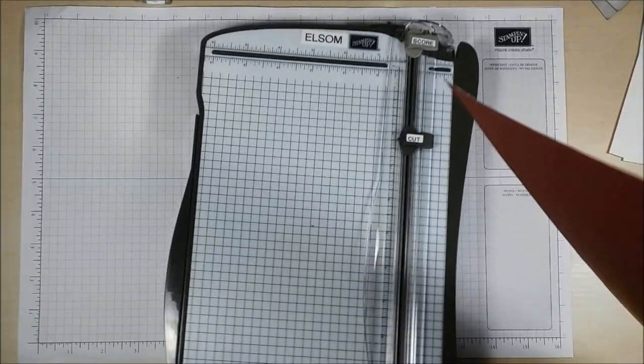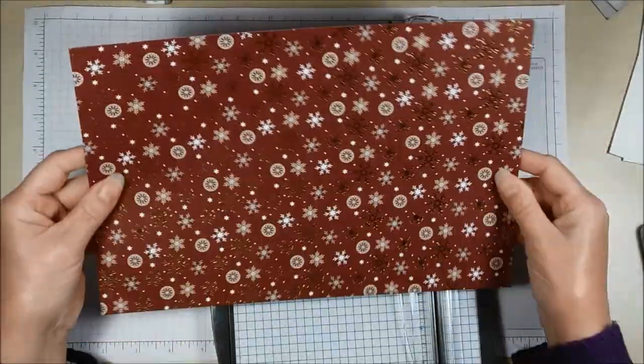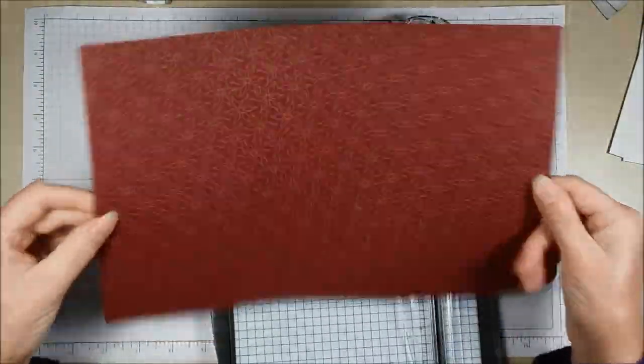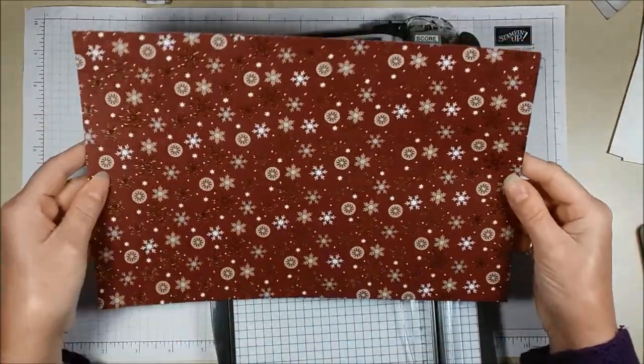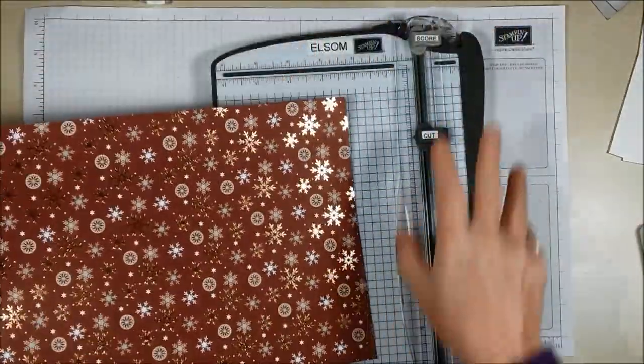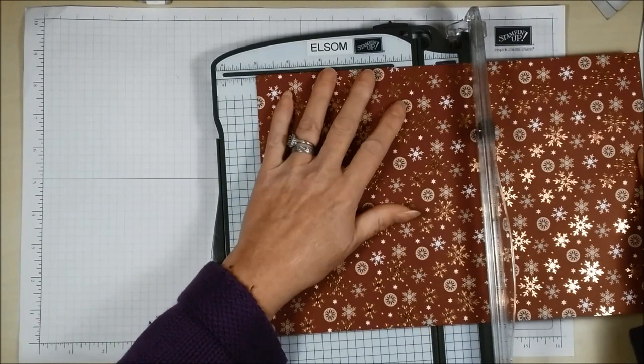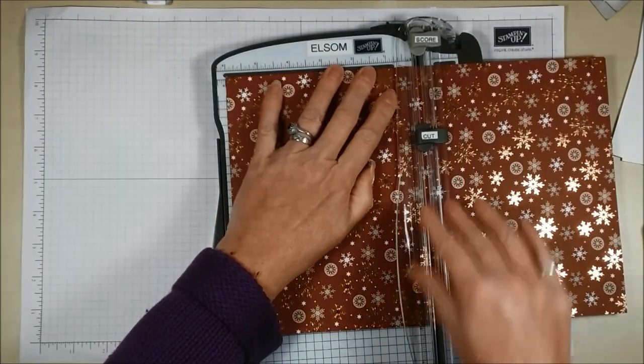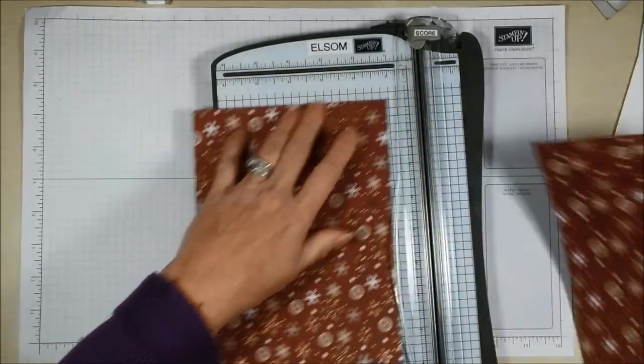So I have some Joyous Noel designer series paper. It's a specialty paper and the sheets have these beautiful copper accents on them. So I'm going to start by just cutting a piece of this paper six by six.